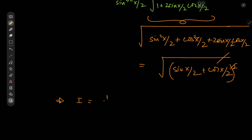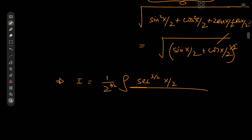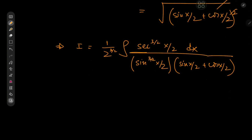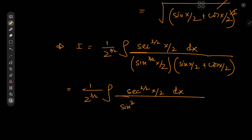So this implies that the target integral I equals 1/2^(3/2) times the integral of sec^(3/2)(x/2) divided by sin^(3/2)(x/2) times (sin(x/2) + cos(x/2)) dx. I really like secants and tangents when dealing with these kinds of integrals. So we might as well factor out a cos(x/2) term and introduce a tangent, giving us the integral with (tan(x/2) + 1) in the denominator.